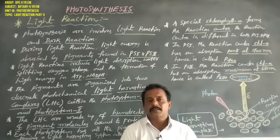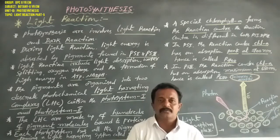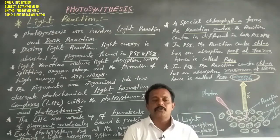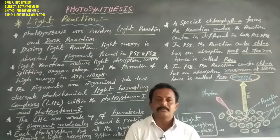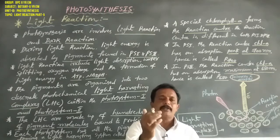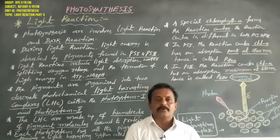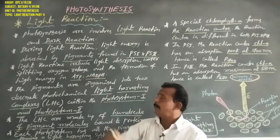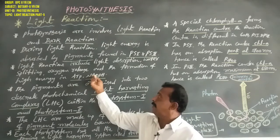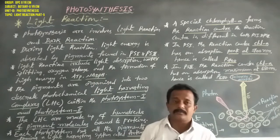During light reactions, the light energy is easily absorbed by pigments found in PS1 and PS2. This includes absorption of light, water splitting with release of oxygen, and formation of high-energy chemical products such as ATP and NADPH. ATP means adenosine triphosphate and NADPH means reduced nicotinamide adenine dinucleotide phosphate.